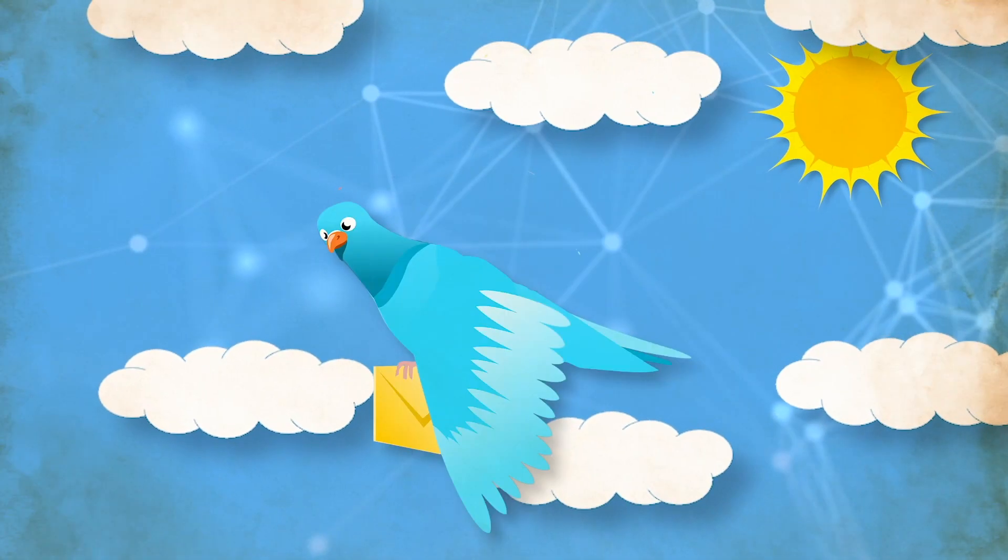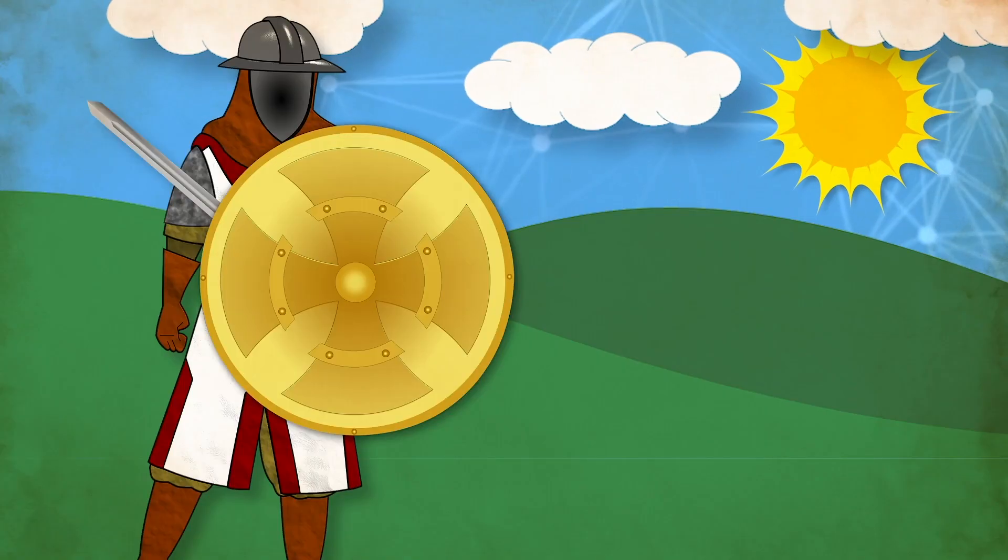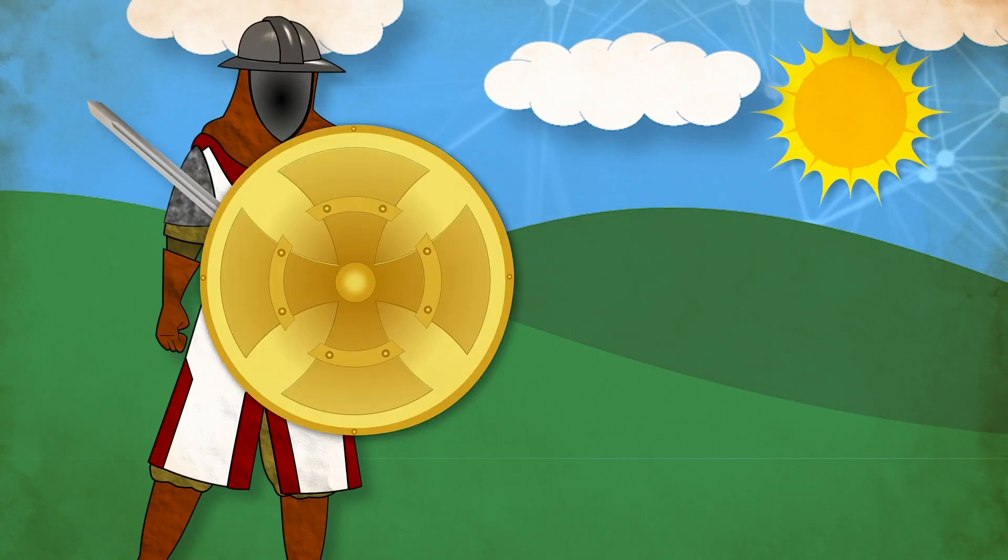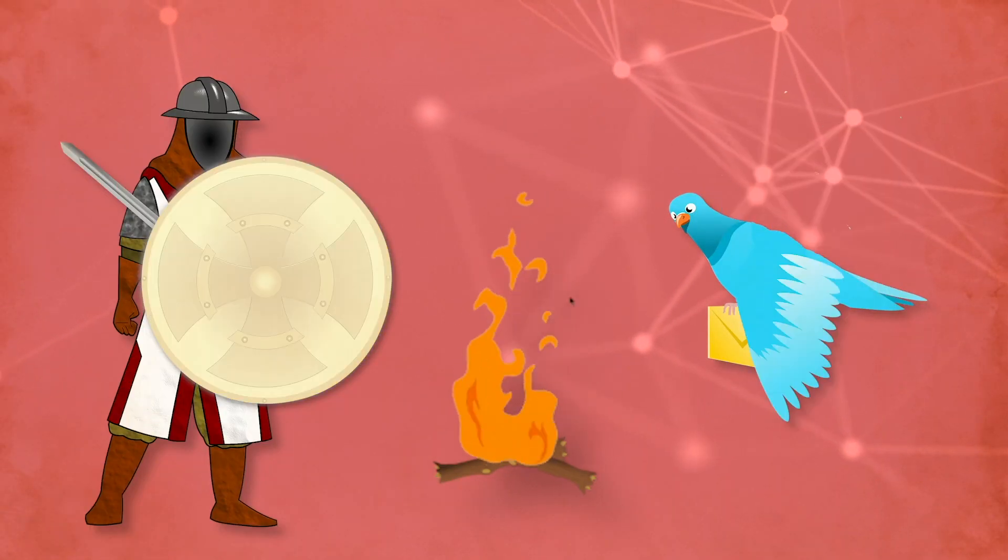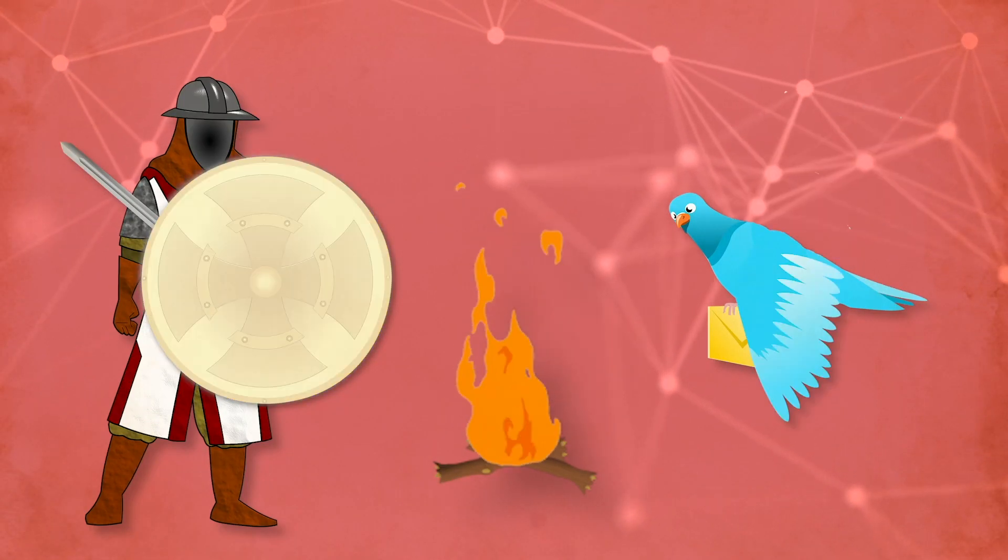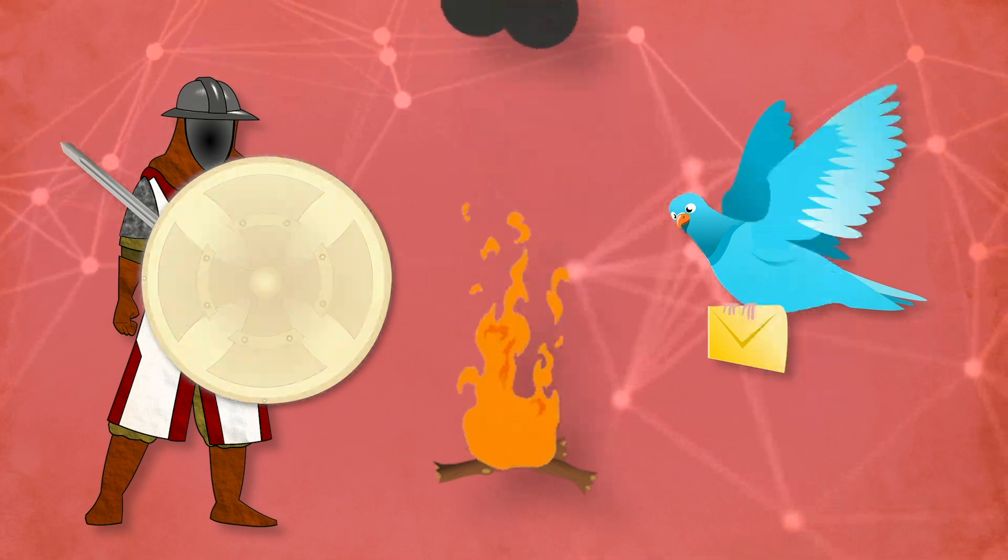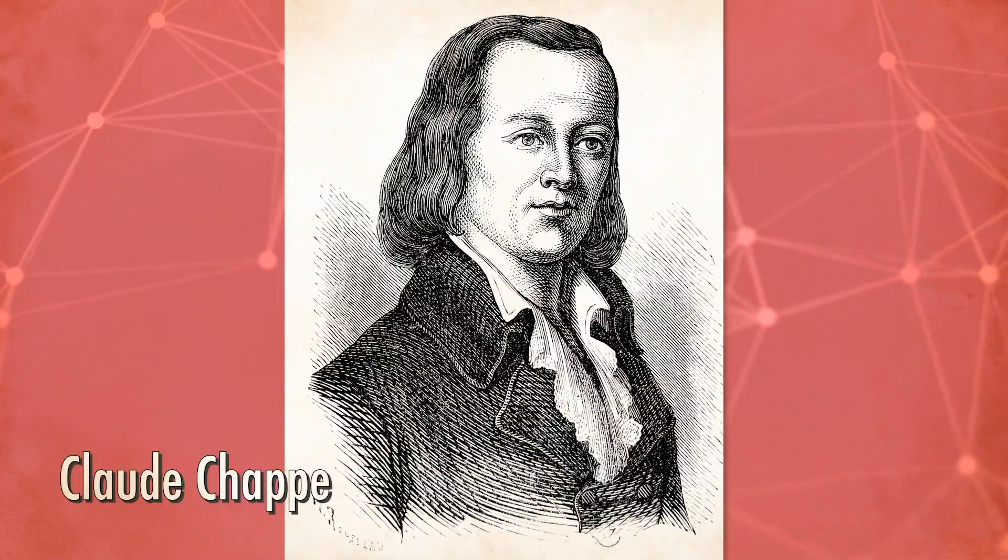Some time after that we had homing pigeons with notes tied to their legs and polished shields to reflect flashes of sunlight and signal over long distances. But all of these methods were often haphazard or used infrequently during times of war, or under extraordinary conditions. But Claude Schaap had grander plans.